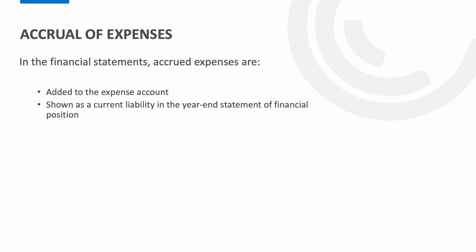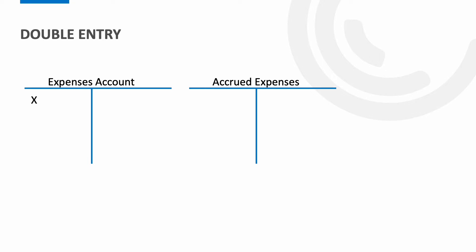Within the financial statements, accrued expenses are added to the expense account, therefore increasing its value. They are then shown as a current liability in the year-end statement of financial position, to represent the amount still owed to the supplier. This ensures that the profit or loss records the expense incurred for the year instead of simply the amount paid. In other words, the expense is adjusted to relate to the time period covered by the profit or loss, and the statement of financial position shows a liability for the outstanding amount.